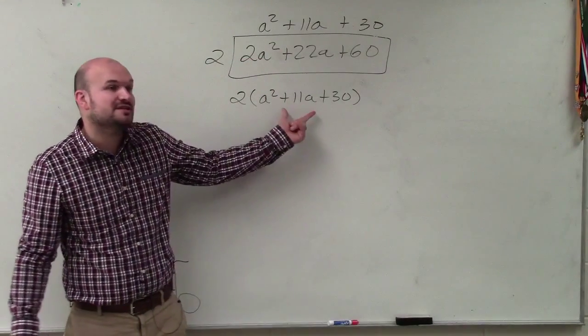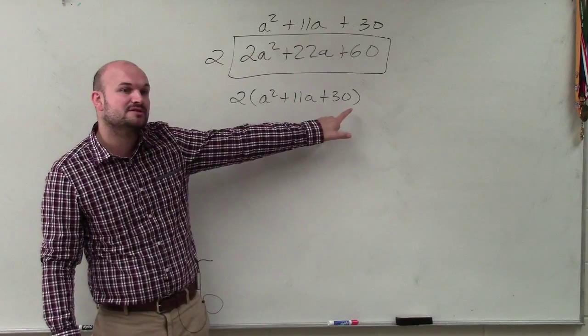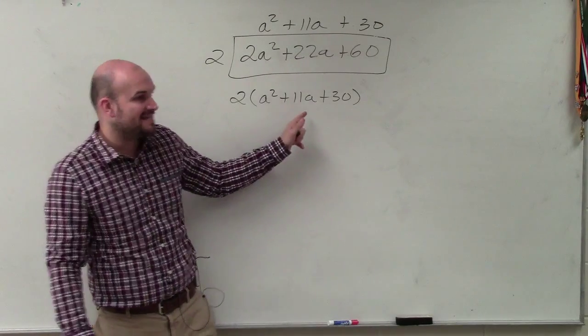Then they wanted you to factor this completely. So basically, we're looking at what two numbers multiply to give you 30, add to give you positive 11.